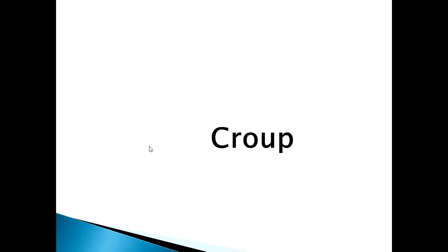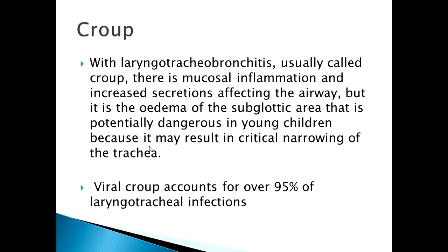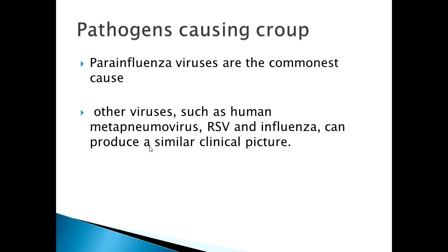Now moving to the second upper respiratory tract infection, which is croup. Laryngotracheobronchitis, usually called croup, involves mucosal inflammation and increased secretions affecting the airway. It is the edema of the subglottic area that is potentially dangerous in young children because it may result in critical narrowing of the trachea — this is a life-threatening emergency in severe croup. Viral croup accounts for over 95% of laryngeal tracheal infections, and the most notorious organism is parainfluenza virus.